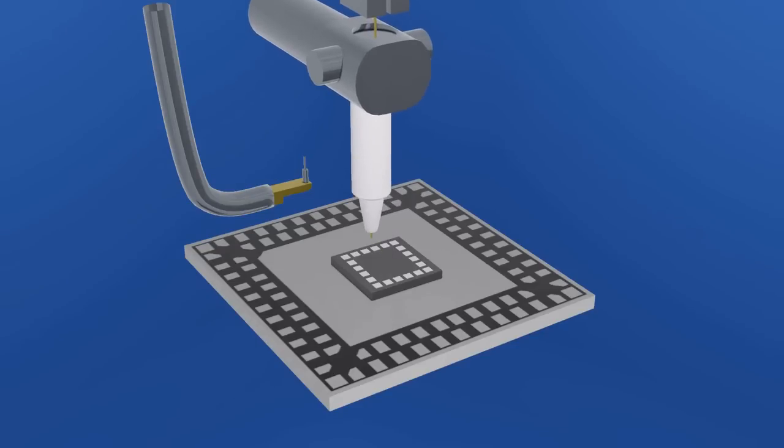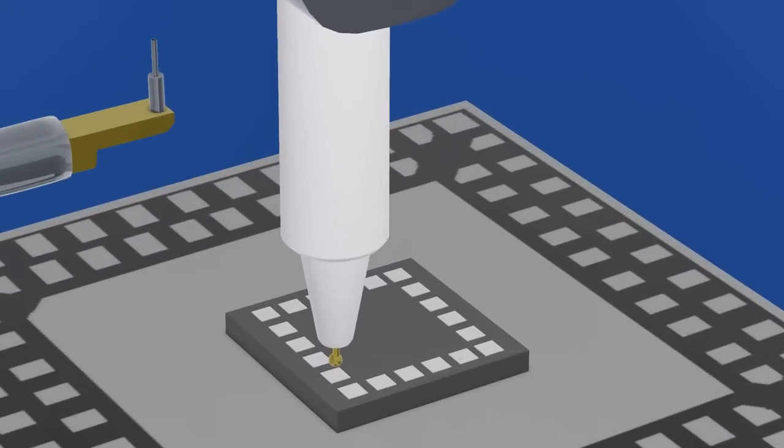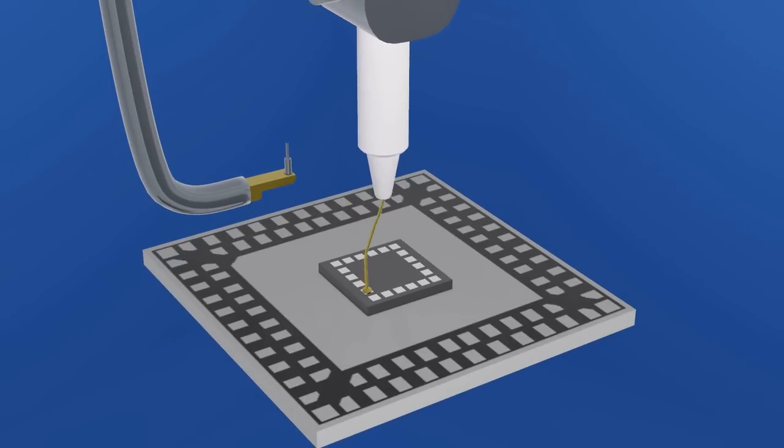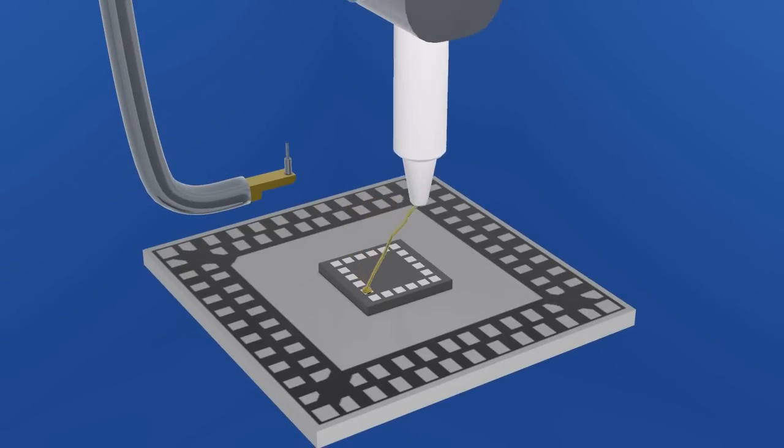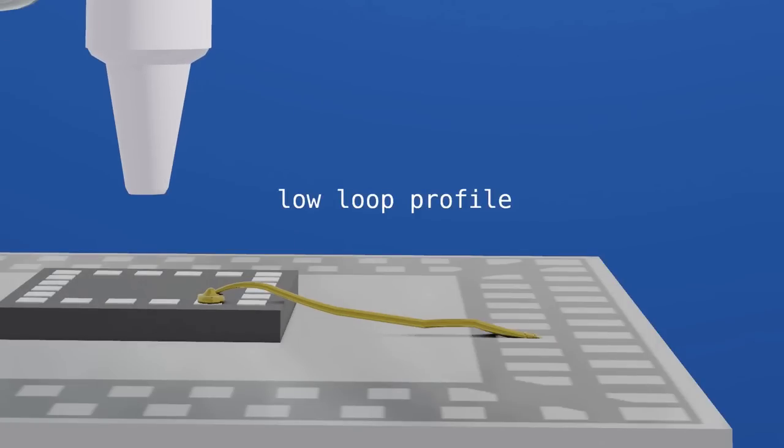Often, the packaging for many modern integrated circuits is quite thin. This requires special bonding techniques to accommodate the wire in the package. The wire bonding tool can be programmed to create a series of sharper bends in the wire so that the wire loop has a low profile and will fit within a thin package.